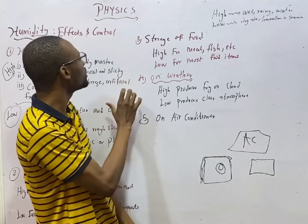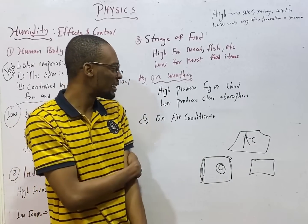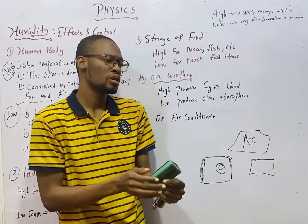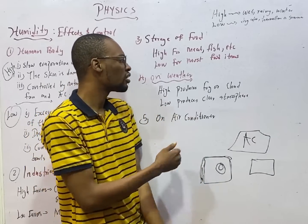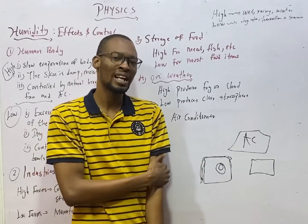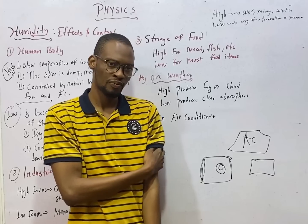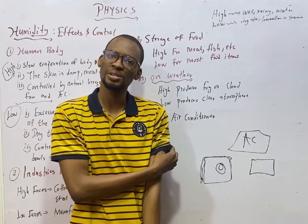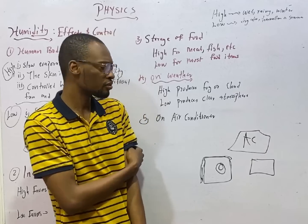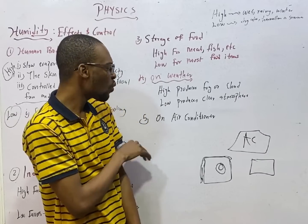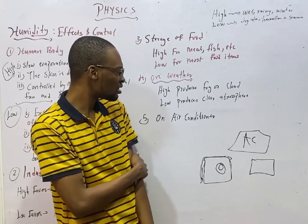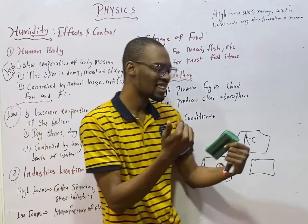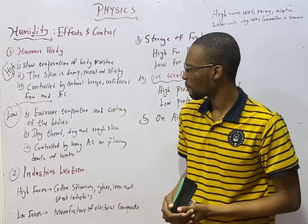The effect of humidity on weather means that high humidity produces fog or cloud, as explained under condensation in the previous episode. Low humidity, on the other hand, produces clear atmosphere.